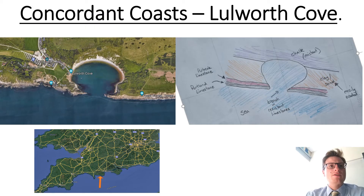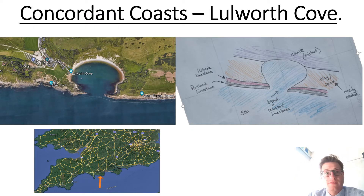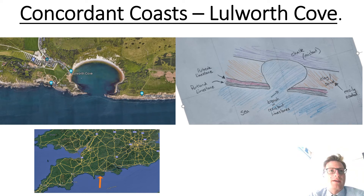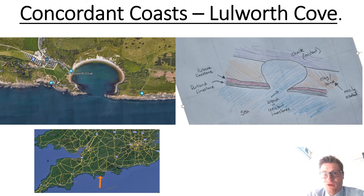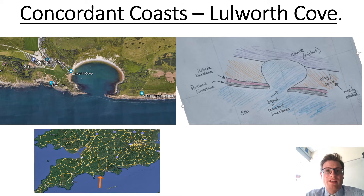Lulworth Cove is on the south coast of England, in Dorset, on the southern section of the Purbeck coast. From the sketch you can see that the rock type runs parallel to the coast. Here we can see the hard rock — the limestones — next to the sea, running parallel to the shore, meaning erosion on this coast is going to be quite slow.